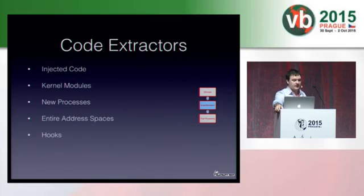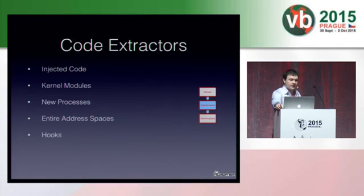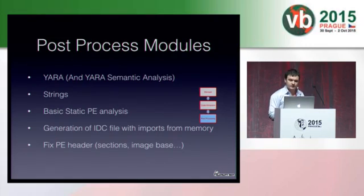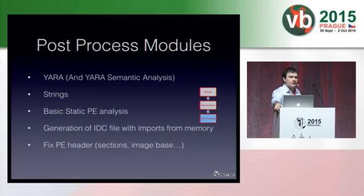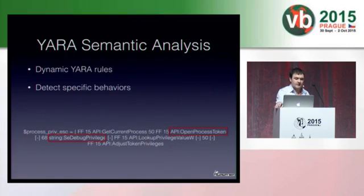Code extractors are modules that are executed in order to extract the different malicious code components from memory. There are separate modules for code injection, new processes, hooks, etc. — all the techniques I showed before. Researchers can write new modules that access memory and extract various information and artifacts. Each code extractor module may call zero or more post-processing modules, which are tasked with automated actions like fixing the PE header, performing static analysis, doing a YARA scan, extracting strings, etc.